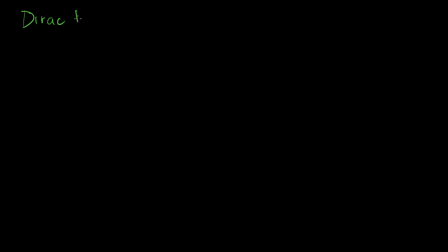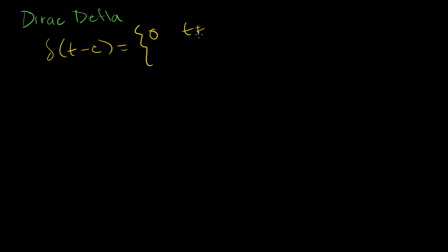In the last video, I introduced you to what is probably the most bizarro function that you've encountered so far — the Dirac delta function. I defined it, and I'll do the shifted version: Dirac delta of t minus c equals 0 when t does not equal c.